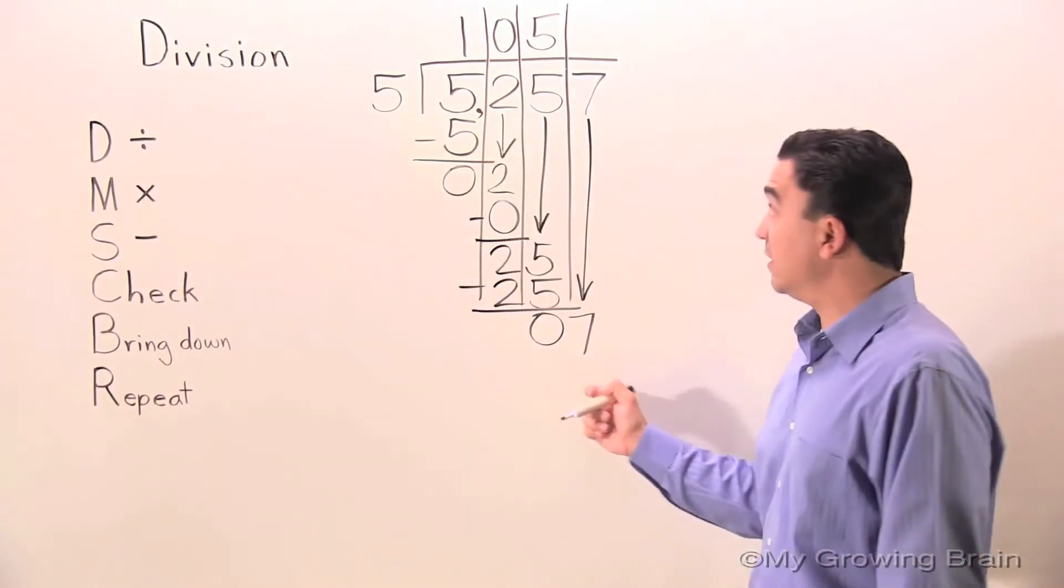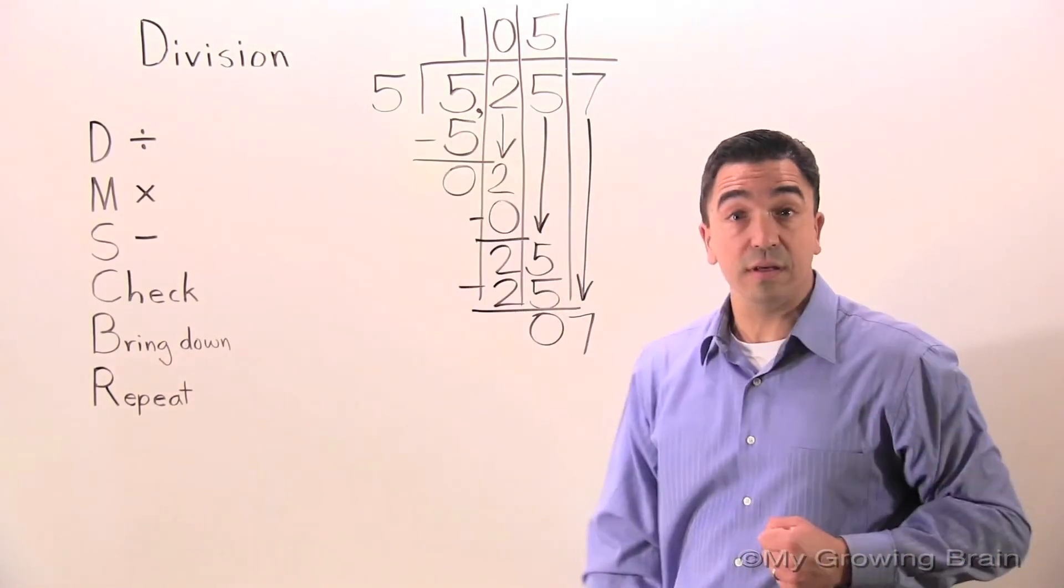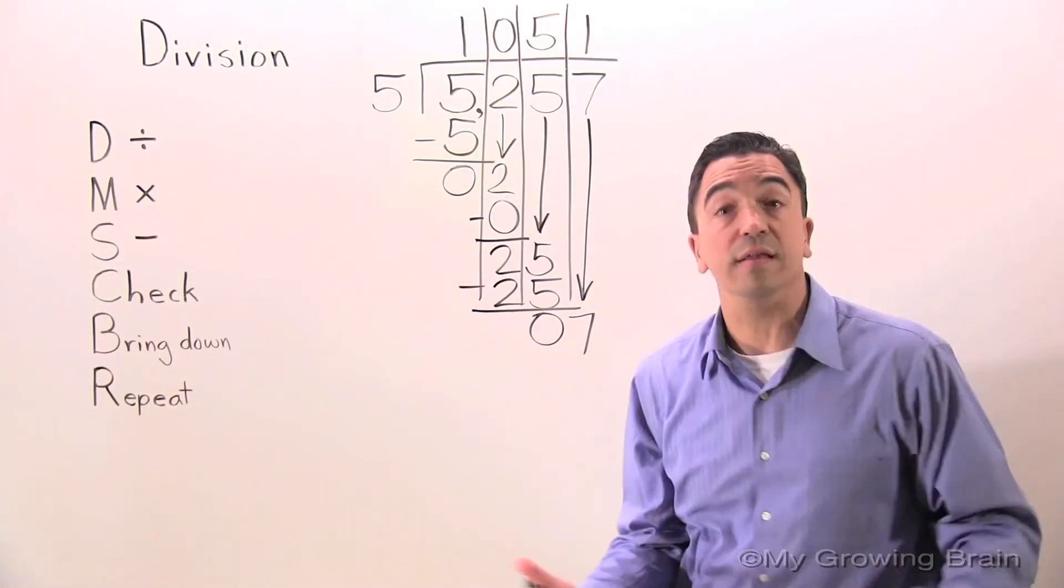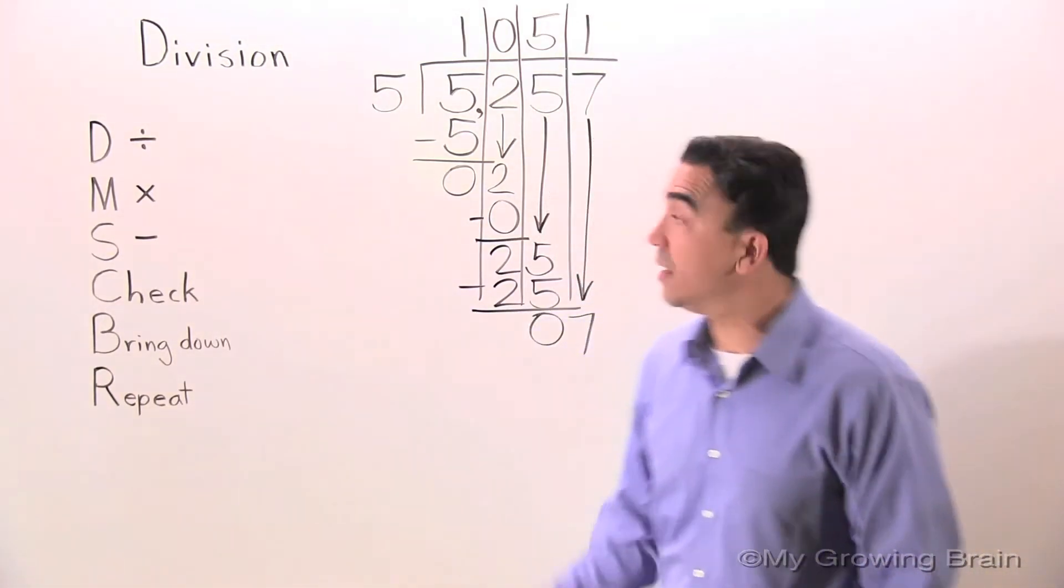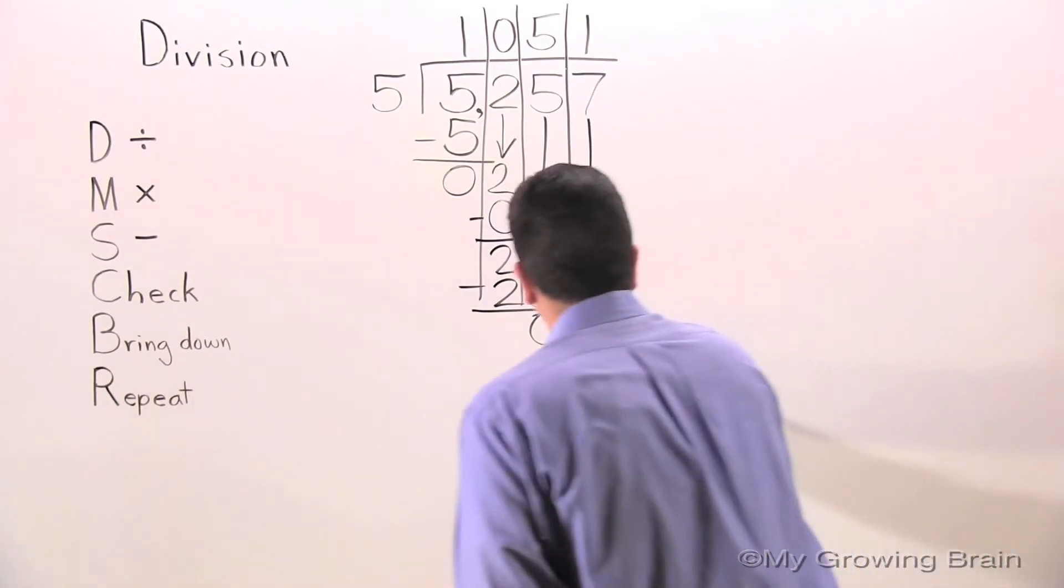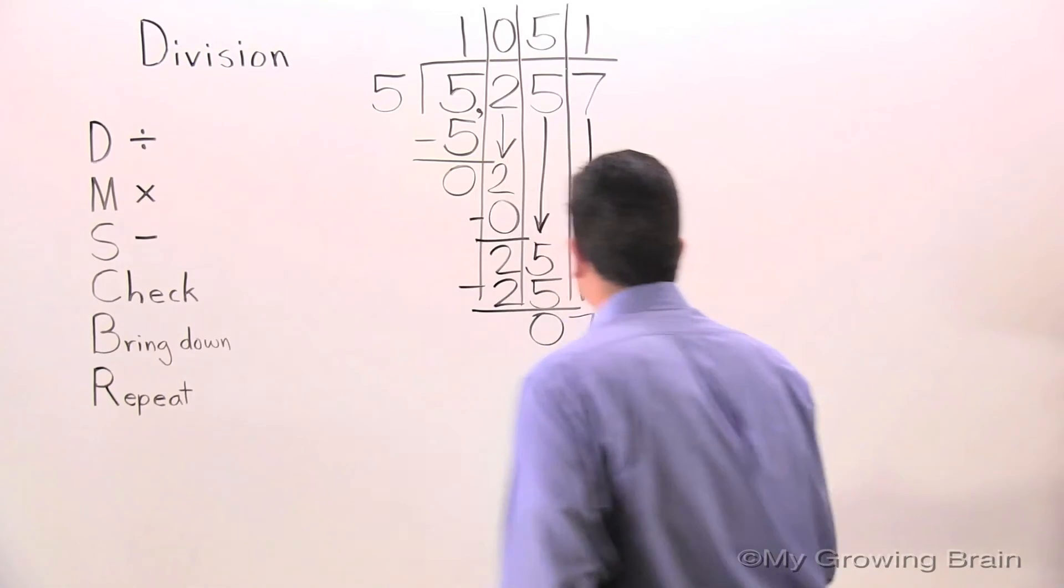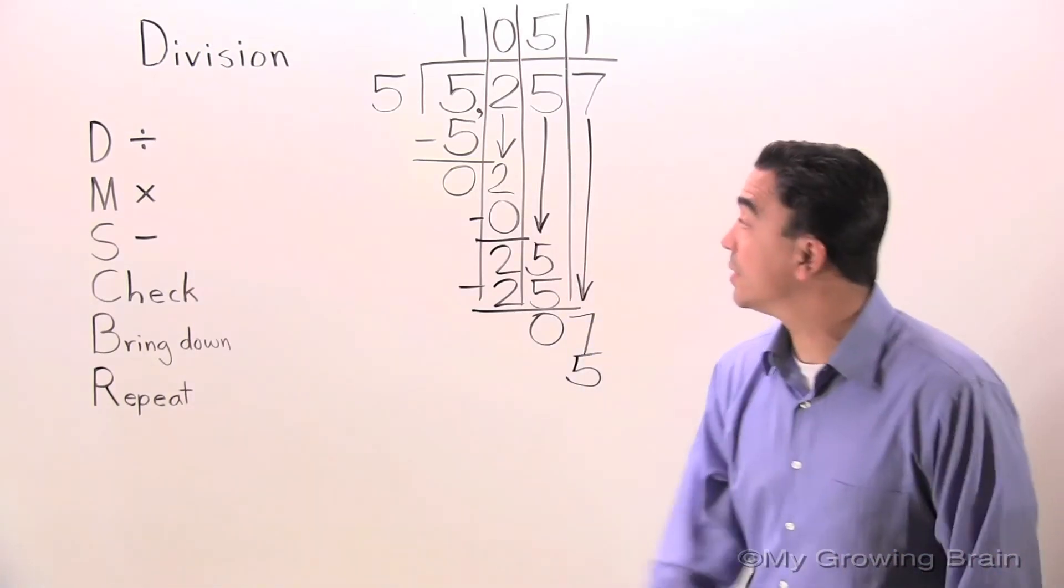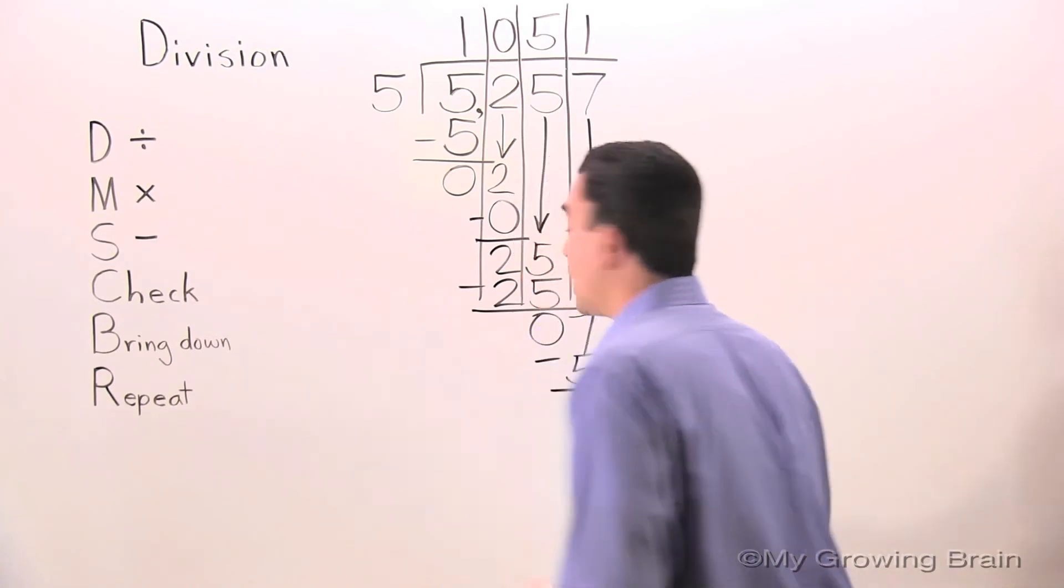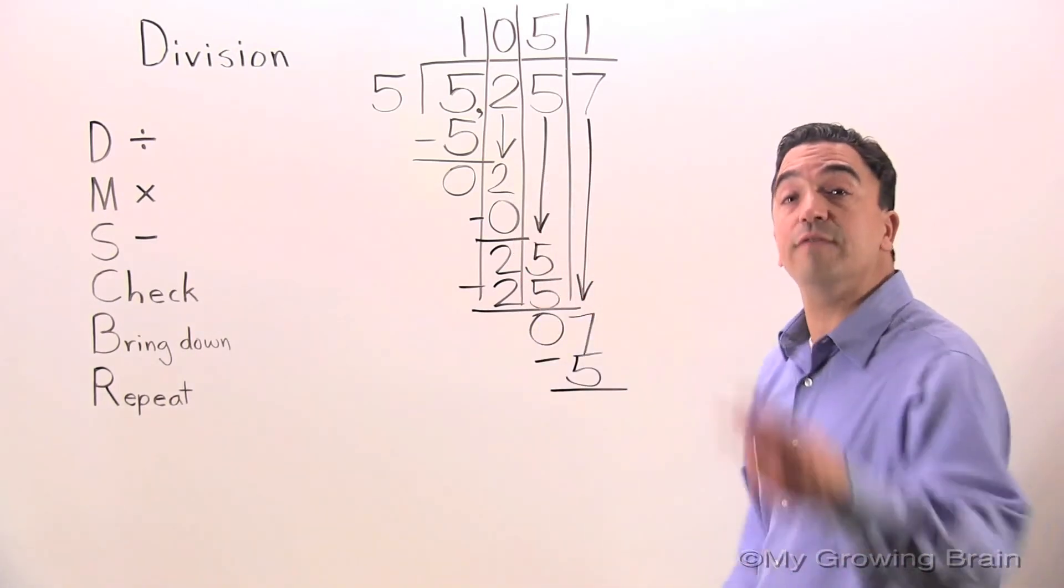Divide: 7 divided by 5, or 5 into 7, one time. Next step, multiply: 5 times 1 is 5. Next step, subtract: 7 minus 5 is 2.